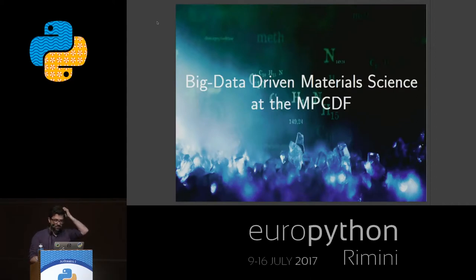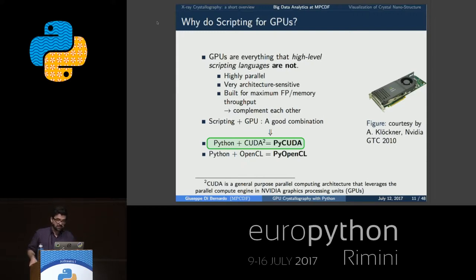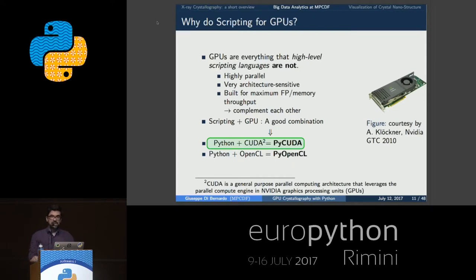So what are we doing at the MPCDF? Why GPU programming in combination with high-level scripting languages like Python? They are polar opposites. GPU parallel programming is highly parallel, very sensitive to the hardware architecture, and built to optimize floating point memory throughput to give tremendous high performance for scientific tasks. On the other hand, Python favors ease of use. But PyCUDA aims to join together these two aspects. PyOpenCL is a similar philosophy and can be considered a sister project, but for the rest of the talk I'm just referring to PyCUDA.